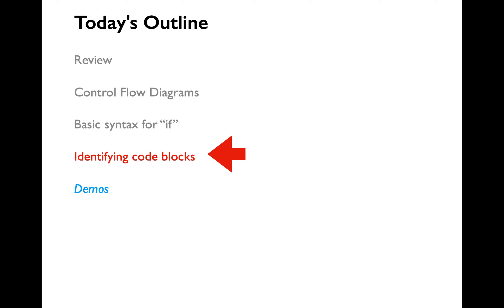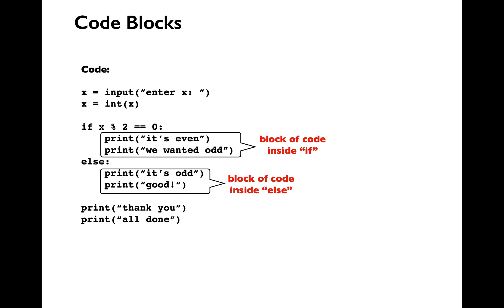Let's learn about blocks of code. The lines of code within the if condition are called a block of code. Similarly, the lines of code within the else part are also called a block of code. One important thing to know about conditionals is that the alternate execution is optional — you can have an if alone without an else. You can only have exactly one else, and else will always be paired with an if. You cannot have an else without an if condition.